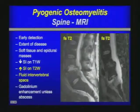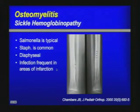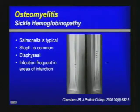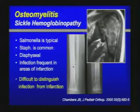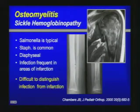In sickle cell hemoglobinopathy, infections are typically caused by Salmonella, though Staphylococcus is also common. These infections are usually located in the diaphysis in areas of infarction. In this example, extensive infarction is visible within the humeral head. It can be very difficult to differentiate infection from infarction — even adjacent synovitis can occur with bone infarction. However, very extensive synovitis should raise suspicion for underlying infection.